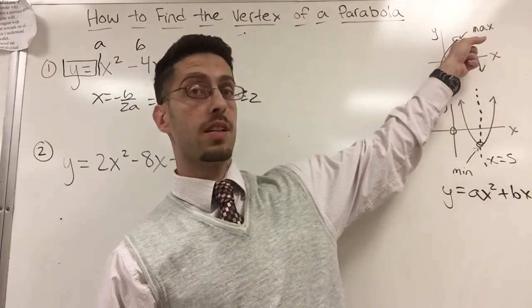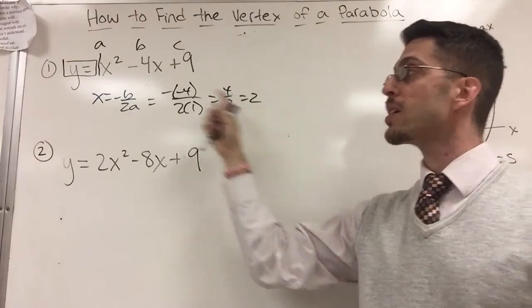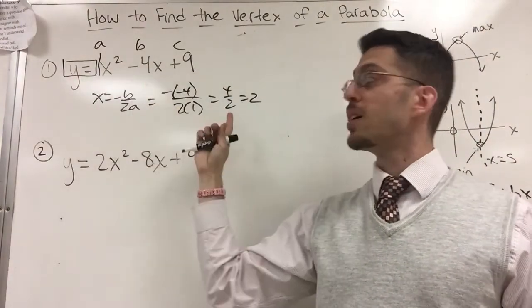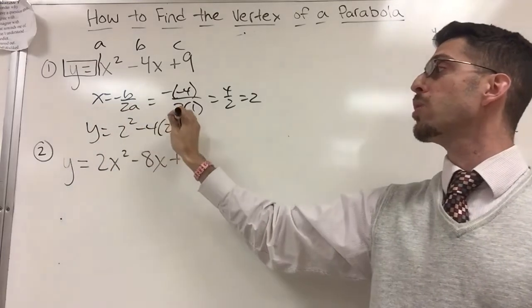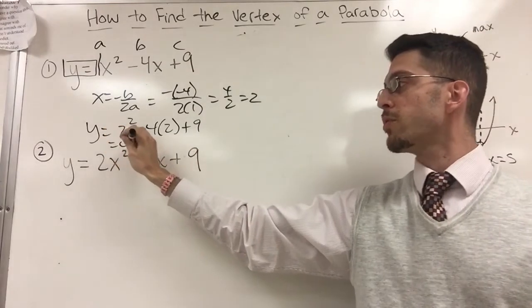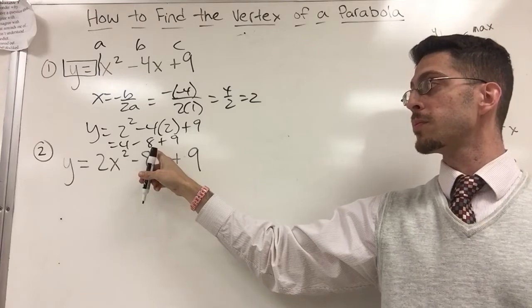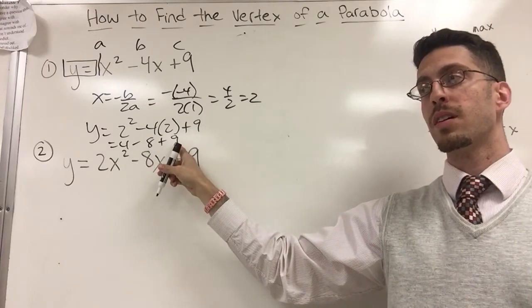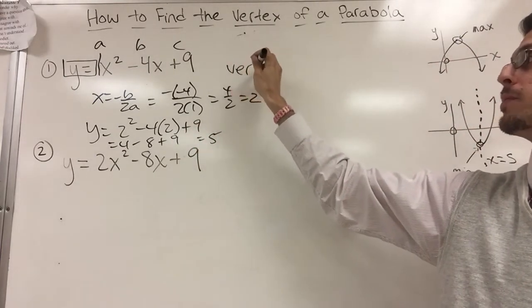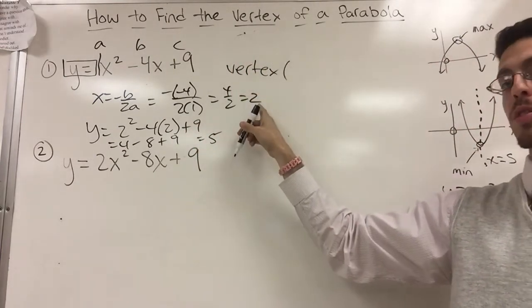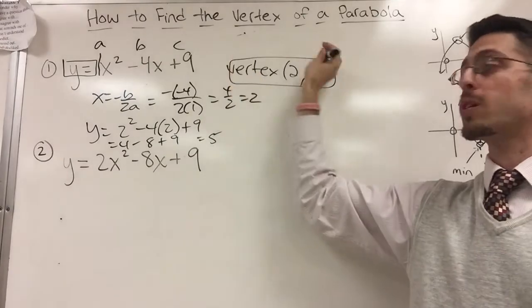My highest point is x equals 2. Remember what I said earlier. A point has coordinates. Not just x but x comma y. So how do I find y if I know x? Oh but y equals all this. So just plug in 2. So y equals 2 squared minus 4 times 2 plus 9. What's that? 4 minus 8 plus 9. 4 minus 8 is negative 4. Negative 4 plus 9 is 5, right? 5. So what is my vertex for the number 1? The x coordinate is 2. The y coordinate is 5.